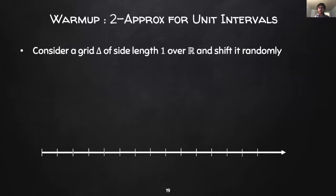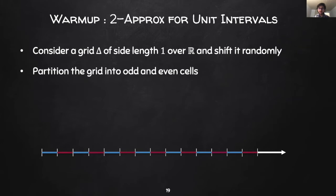Let's begin with a warm-up algorithm that obtains a 2-approximation for unit weight intervals. Consider a grid delta of side length 1 and shift this grid randomly. Then, partition each cell in the grid into odd and even cells as follows.